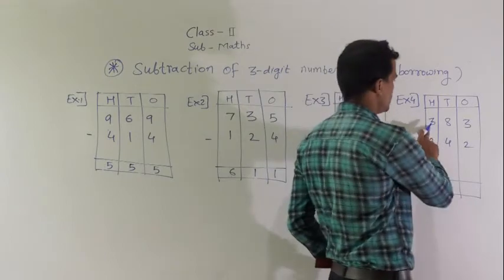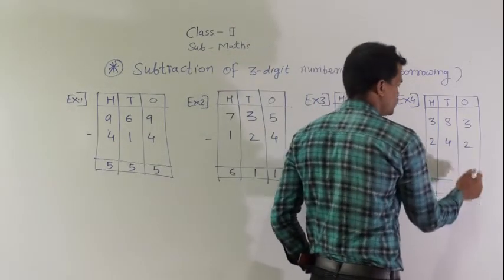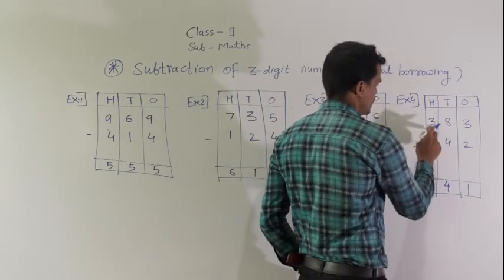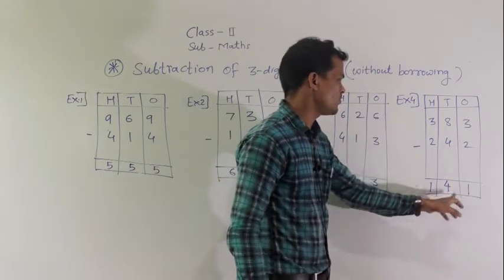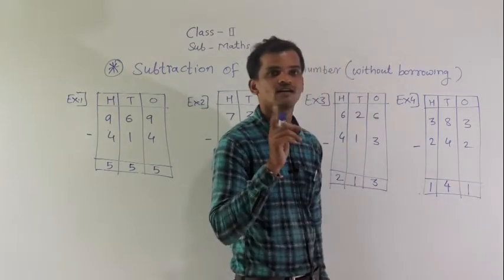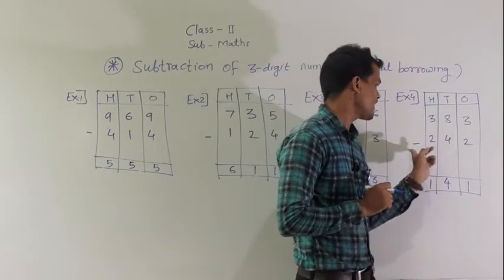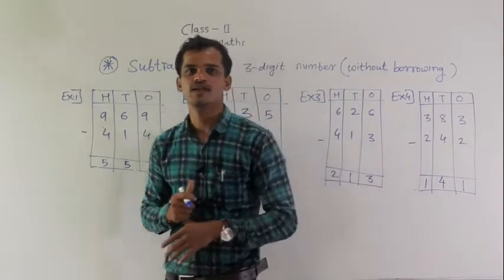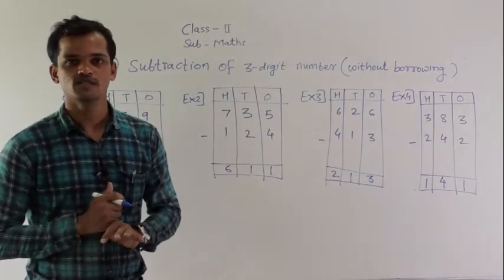Next example: 383 minus 242. 3 minus 2, 1. 8 minus 4, 4. 3 minus 2, 1. 141 is the difference of 383 and 242. So, these are very simple examples. Only subtract the values and start from 1's place.